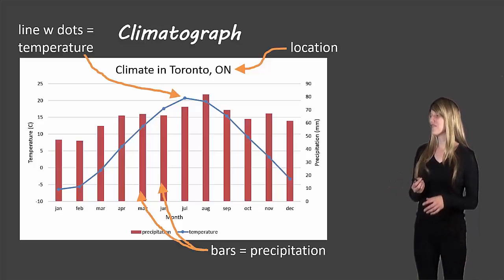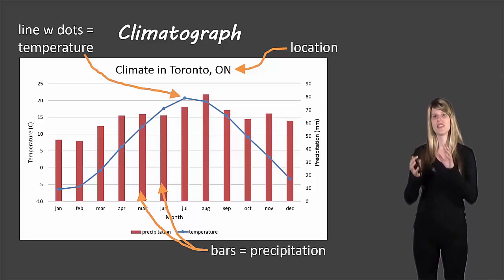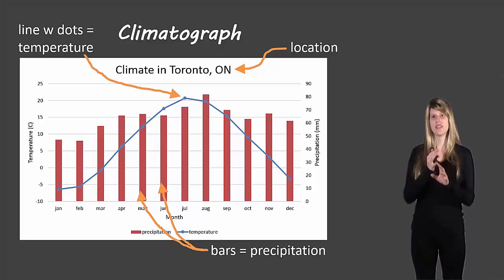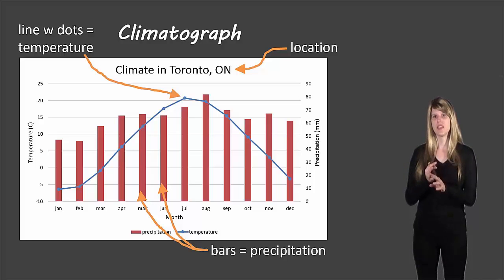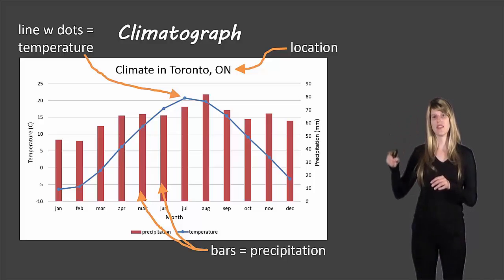First of all, when you have a climatograph, there are two sets of data that are plotted: temperature and precipitation. Temperature is always done as individual data points that are plotted with a line connecting all the points together.